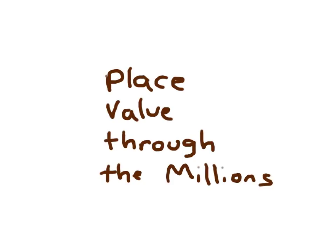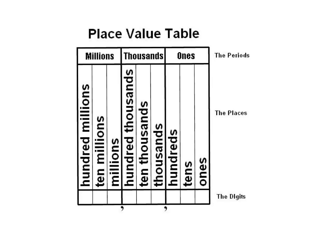Place value through the millions. Here is a place value table, and I'm going to place a number into it. This number is 672,031,506, where each of those digits has a different value based on where it is in the number. This has more periods than numbers you're probably familiar with. We had talked about the ones period and the thousands period already, and now we're adding the millions period so that we have larger numbers.